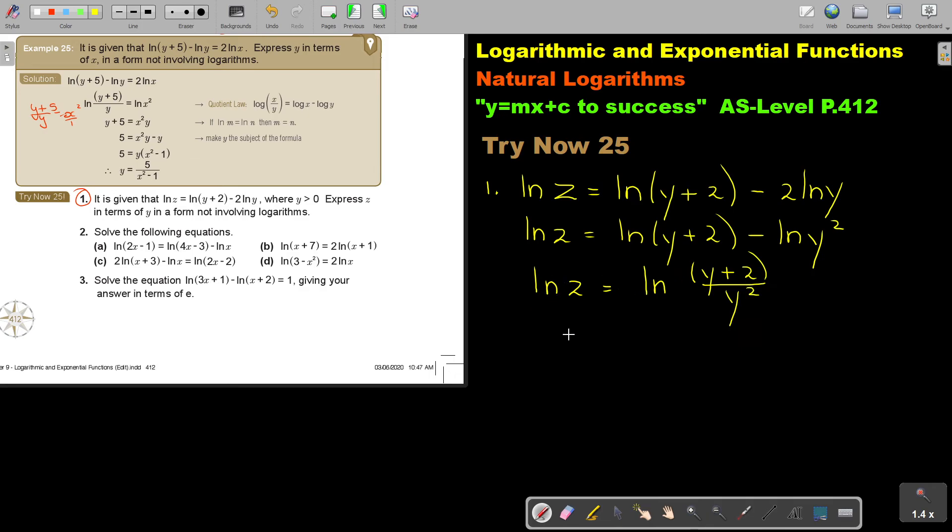Now, I take the lns away, and I get z equals (y+2) over y squared. And that's the answer. Because they want to find it, so express z in terms of y. That was actually very easy now.